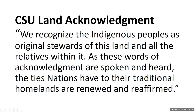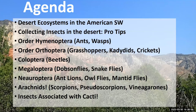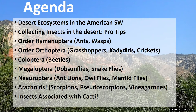Today I'm going to talk about desert ecosystems, then collecting insects and arthropods in the desert, and then I'll go through a series of different groups. We'll cover Hymenoptera — ants and wasps, not bees today. We'll discuss the order Orthoptera: grasshoppers, katydids, crickets. Then Coleoptera, some beetles. We've got Megaloptera and Neuroptera — orders many folks know very little about and they're some of the coolest arthropods out there. Lastly, we'll go over arachnids and insects associated with cacti.